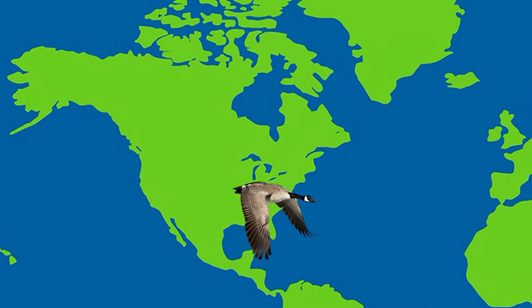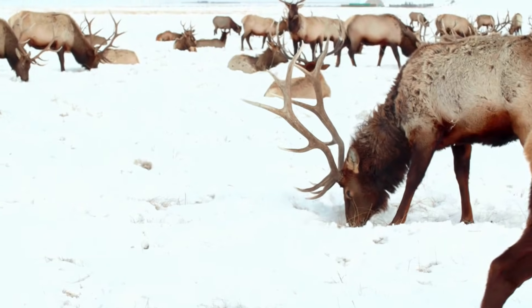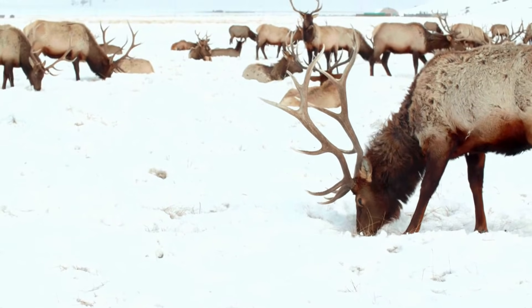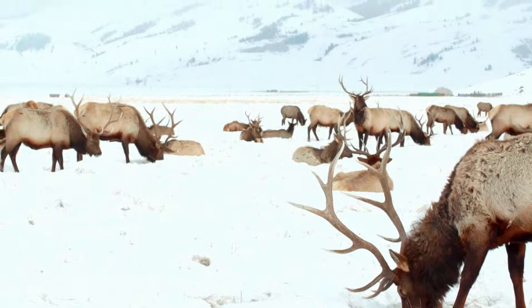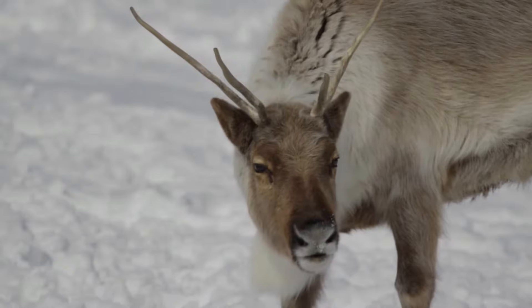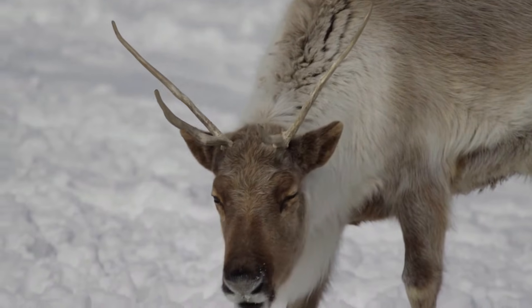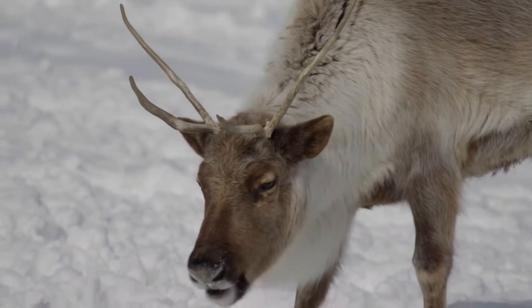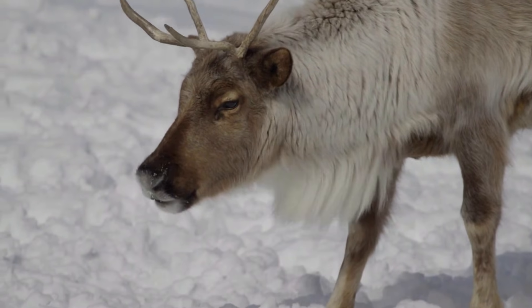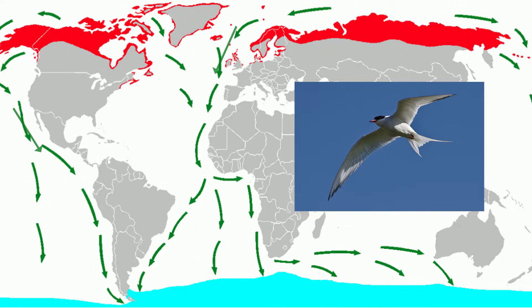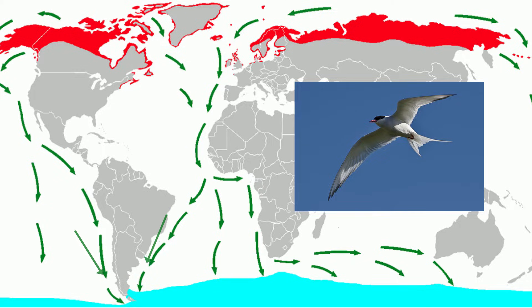The Grant's caribou is another example of an animal with a long migration journey. These animals travel almost 4,000 kilometers in order to reach their calving grounds and find food sources that satisfy their vegetarian lifestyle. The Arctic Tern will fly more than 17,000 kilometers between their summer home in the Arctic Circle and their winter residence near the South Pole.